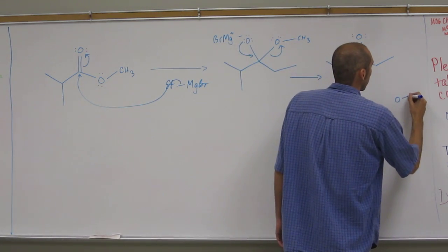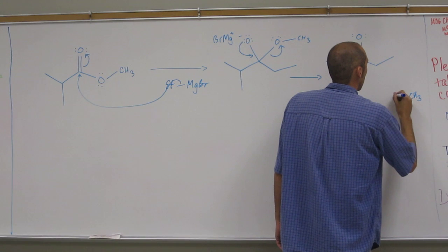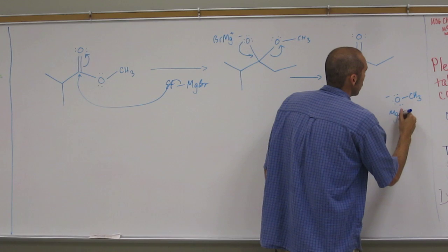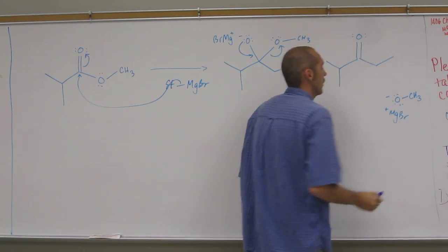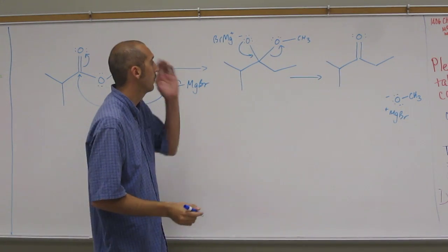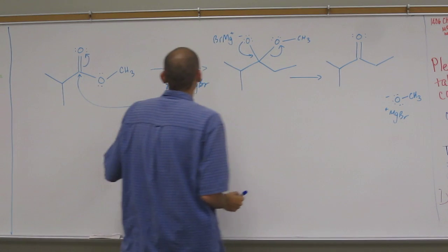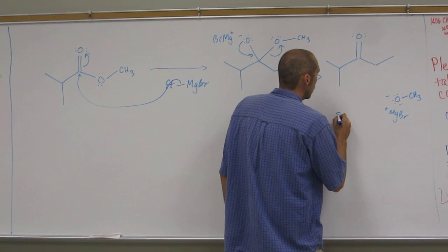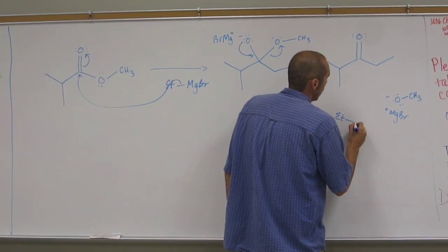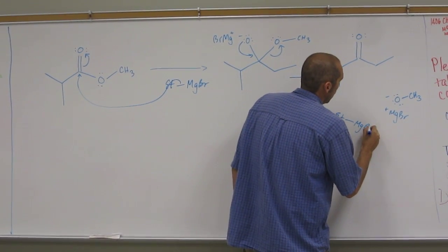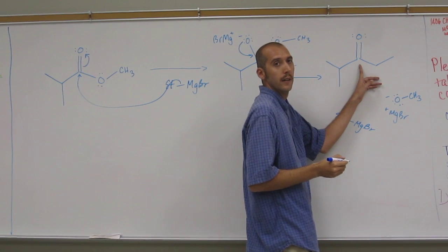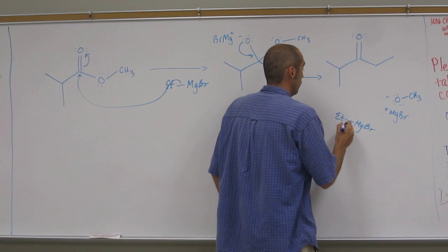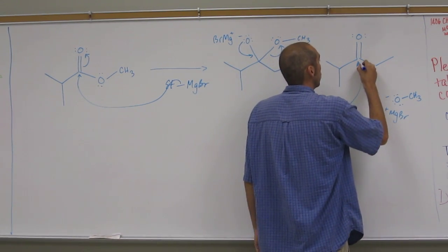And you're going to have, of course, the methoxide, but the MgBr is going to be associated with it. Okay? But remember, we have excess of this stuff. Okay? So what's going to happen now is you're going to have another one. Ketone is less reactive, but still reactive enough to have the Grignard reagent react with it.